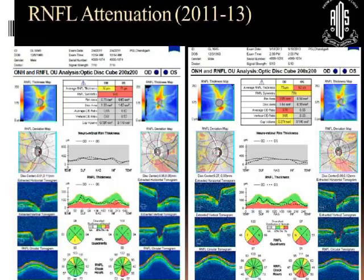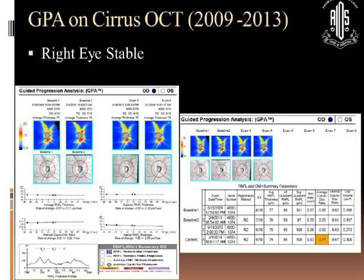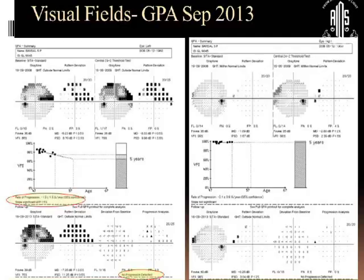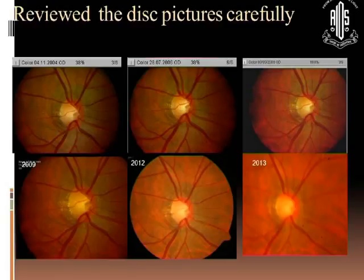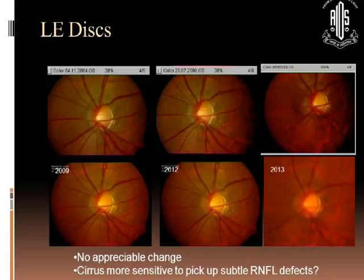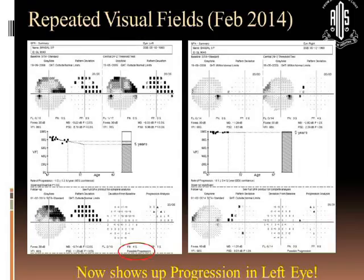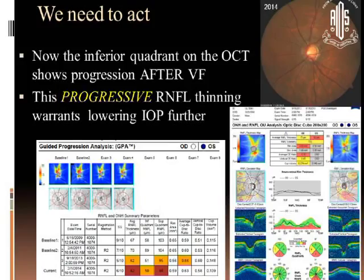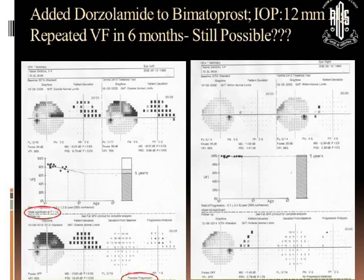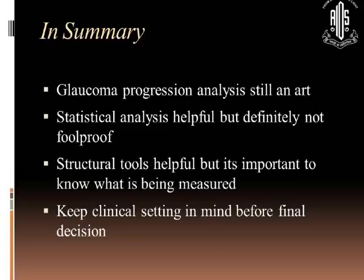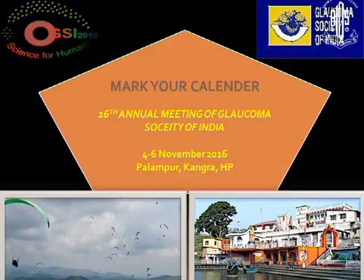Everything was stable for the next three years, then RNFL attenuation was seen. The right eye was stable, but the left eye showed progression on Cirrus. Visual fields again showed no progression detected. Reviewing disc pictures carefully for both eyes showed no clear indication of progression and no apparent changes in disc features — so just observe a little more. Then it shows progression in the left eye, so we need to act and add something more. Repeated fields still show possible progression. With any technique, if you are getting a progression signal, be extra alert and keep doing the other techniques. It is not necessary that progression will be shown on all three things, but ultimately you have to correlate clinically. That is the crux of this lecture.